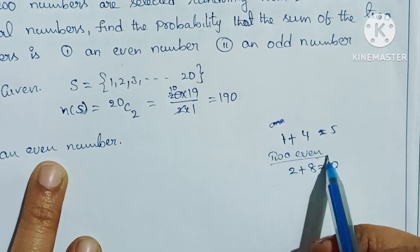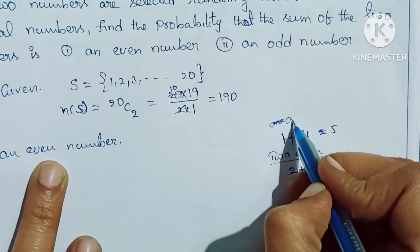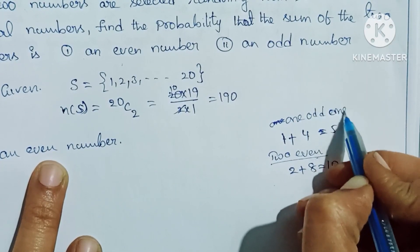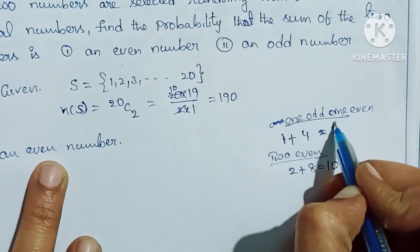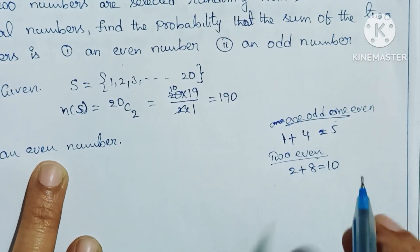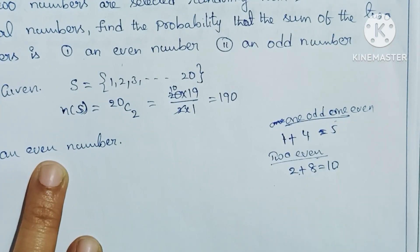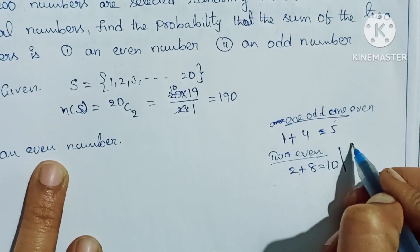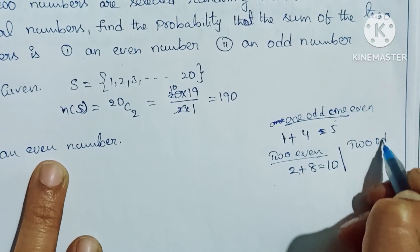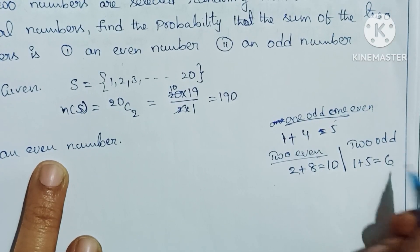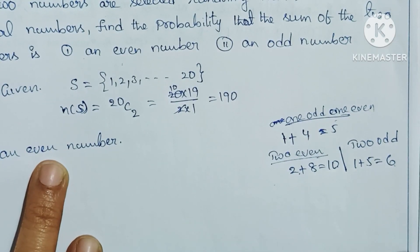We can get an even sum from 1 odd and 1 even, which gives odd. Two even numbers give even. Two odd numbers like 1 plus 5 or 1 plus 7 also give even. So it's possible to get even number from 2 even or 2 odd.